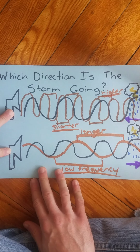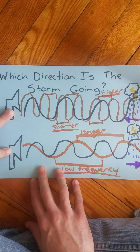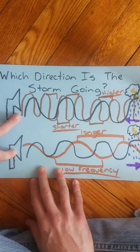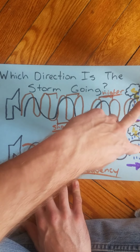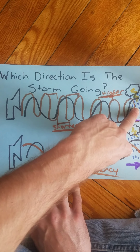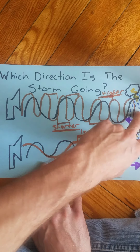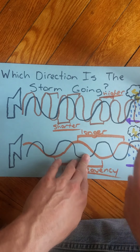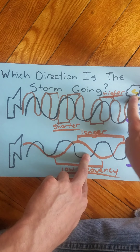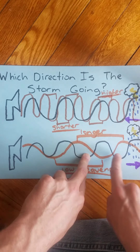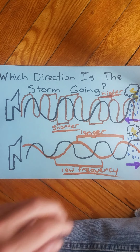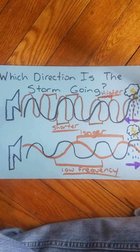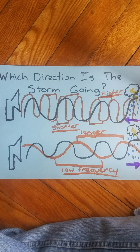Remember, these two radar transmissions were sent from the same spot, sending to the same place. We're just determining whether or not this storm is moving towards us or away from us. This is using the Doppler effect for weather. Thanks, cheers.